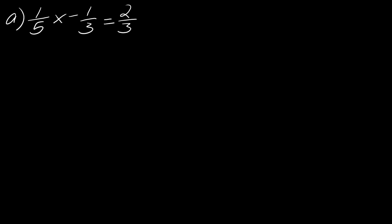Starting with problem a, I've got (1/5)x minus 1/3 equals 2/3. So the first thing that you really want to do is find the LCD of all the fractions, which in this case the LCD would be 15. Then the next thing is you want to multiply this by all the different terms or parts of the problem.